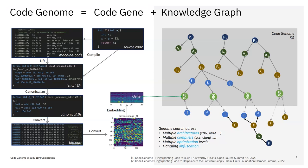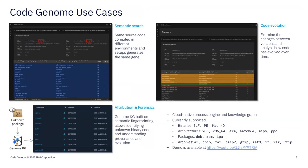We can also handle obfuscation because we're not looking at syntactic or lexical levels, but at the actual meaning and semantics of the software. One example use case is semantic search — given the same source code compiled across different environments with different compilers or architectures (x86 vs. ARM), the idea is to scan for those files and match them even though they have different binaries and different syntactic information, where conventional hashing would fail.